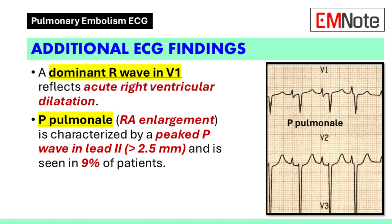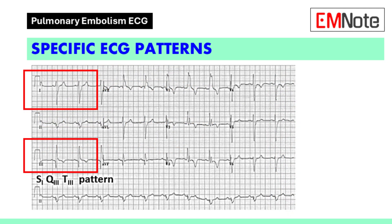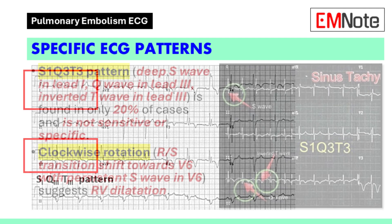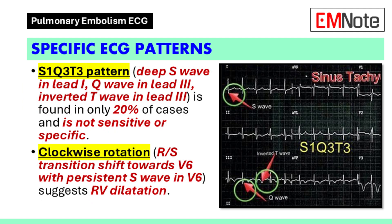This finding is observed in 9% of patients. The S1-Q3-T3 pattern, while often mentioned in association with pulmonary embolism, is neither sensitive nor specific. It is characterized by a deep S-wave in lead 1, a Q-wave in lead 3, and an inverted T-wave in lead 3. This pattern is found in only 20% of patients with pulmonary embolism.